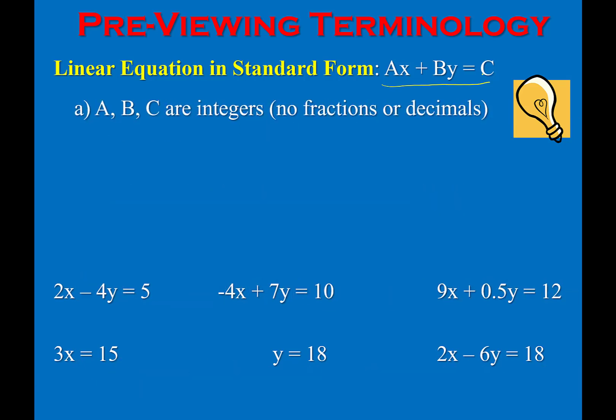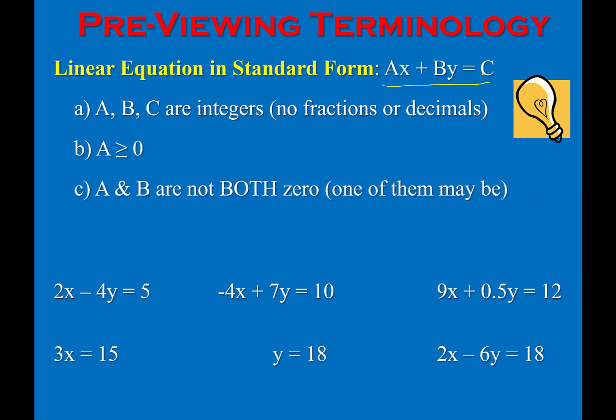The next requirement is that coefficients and constants are not allowed to be fractions or decimals — we need to eliminate those. The next requirement is that the coefficient of x, which is a, must be positive or greater than or equal to 0. Another requirement is that you must have at least the x or y variable — you can't have a linear equation in standard form that says 7 equals 7. New for Algebra 2: the greatest common factor between the coefficients and the constant must be 1.